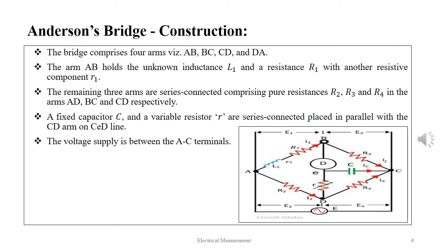Here we see the basic schematic representation of the Anderson's bridge. The bridge comprises four arms namely AB, BC, CD and DA. The arm AB holds the unknown inductance L1 and a resistor R1 with another resistive component small r1.